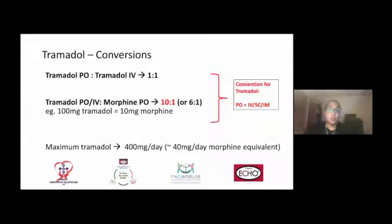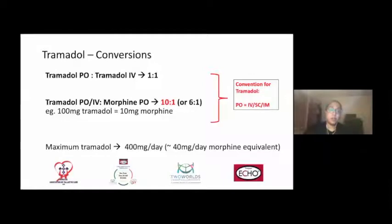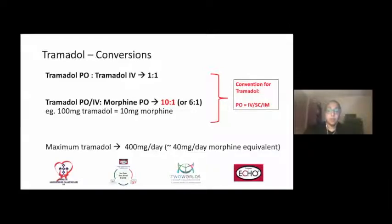When looking at conversions for tramadol, it is available as oral as well as IV formulations, and we generally consider it a one-to-one conversion. However, when looking at morphine equivalents, tramadol can generally be considered at 10 to 1. Therefore, 100 mg of tramadol is generally equated to 10 mg of oral morphine. When we consider that the maximum total daily dose of tramadol is 400 mg per day, that works out to approximate equivalents of 40 mg per day of morphine.